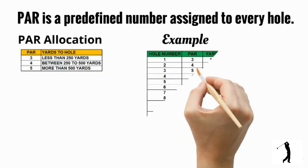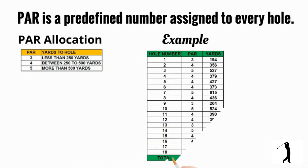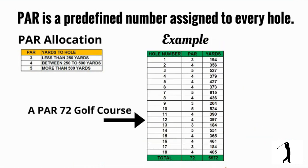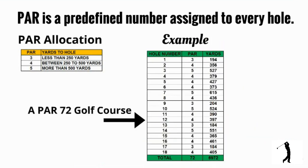Take this golf course for an example. It has 18 holes with a mix of par 3s, 4s and 5s. The total of these pars is 72. Hence, we call this a par 72 golf course.